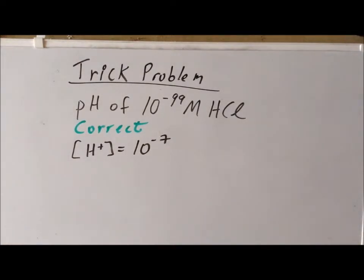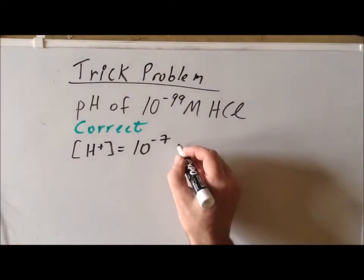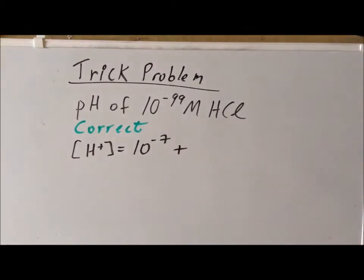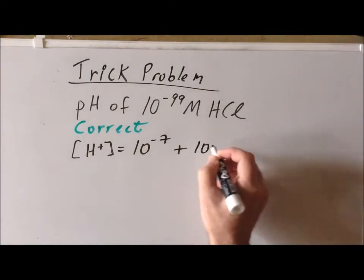In this case, we have a second source of hydrogen ion, which is from the dissociation of the strong acid, hydrochloric acid. And that is 10 to the minus 99 molar.